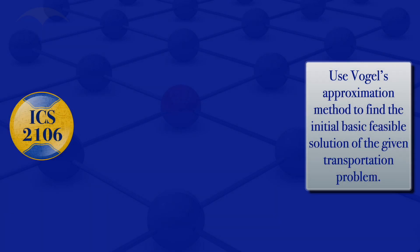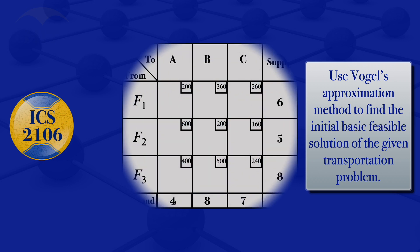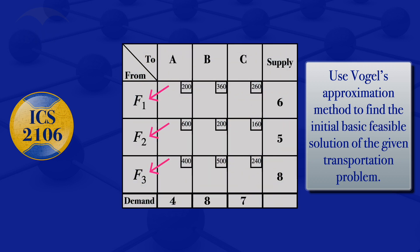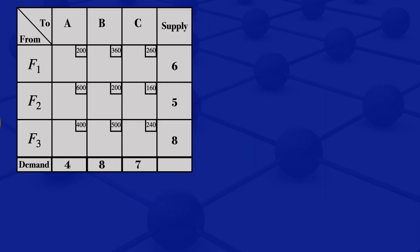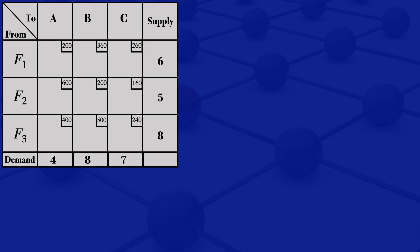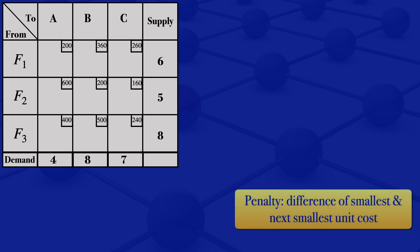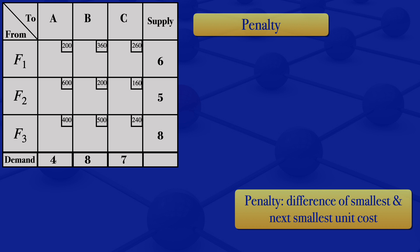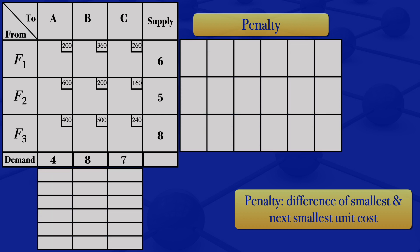In this video I'm going to use Vogel's Approximation Method to find the initial basic feasible solution of the transportation problem with three sources F1, F2, and F3, and three destinations A, B, and C. To make allocations in the unoccupied cells, we have to evaluate the penalties. The penalty is the difference of the smallest and the next smallest unit cost. I'll calculate penalties for the rows, then for the columns.